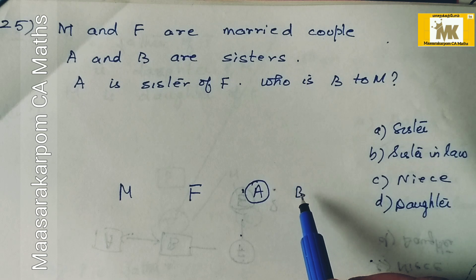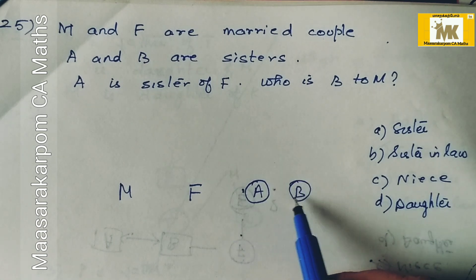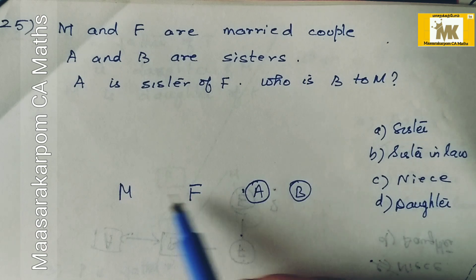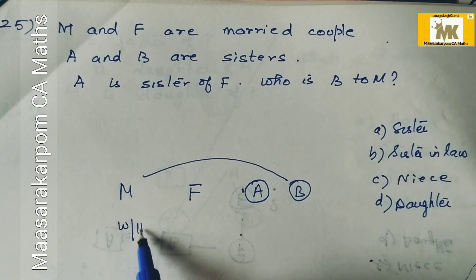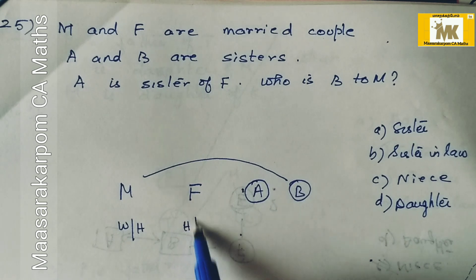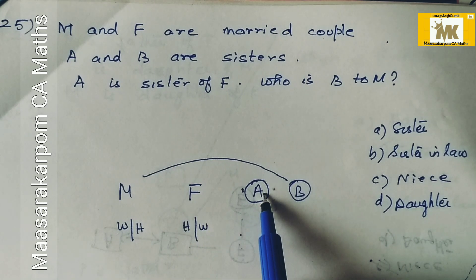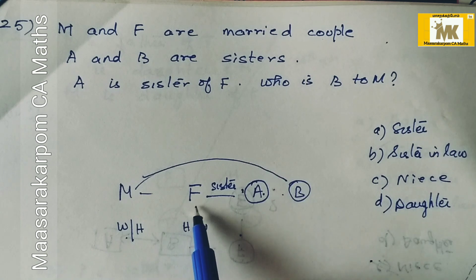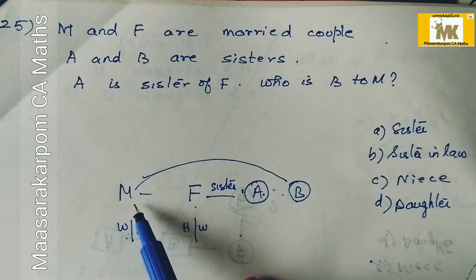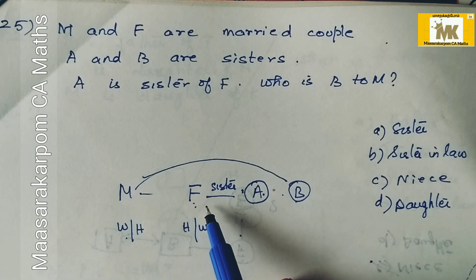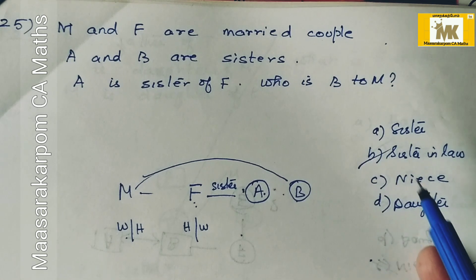Who is B to M? Since M and F are husband and wife, and A is the sister of F, and A and B are sisters, then B is also a sister of F. Therefore, B is the sister-in-law of M.